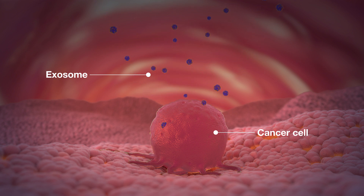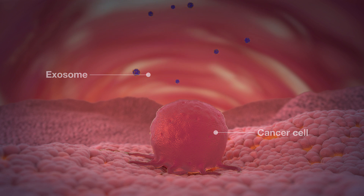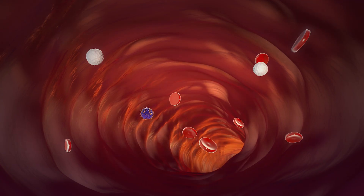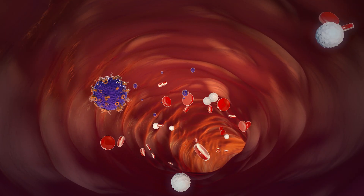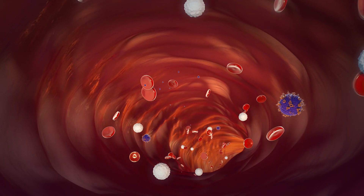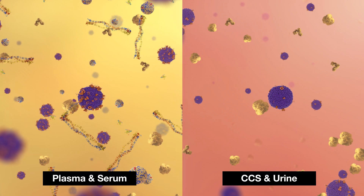For example, cancer cells produce abundant extracellular vesicles that can promote cancer cell growth and help increase metastatic activity as they circulate through the bloodstream. Therefore, understanding the characteristics of extracellular vesicles is pivotal in numerous research fields, including cancer diagnosis and therapeutics.